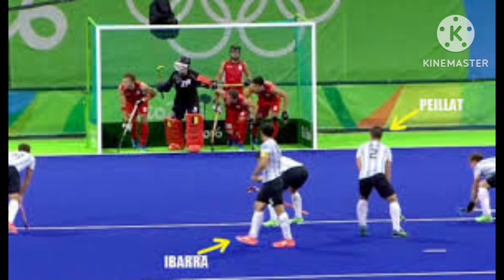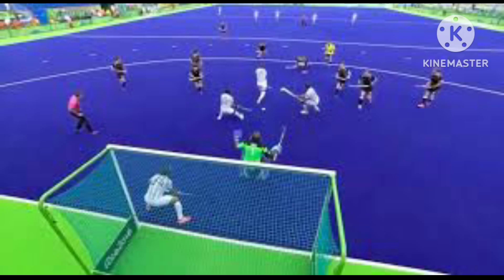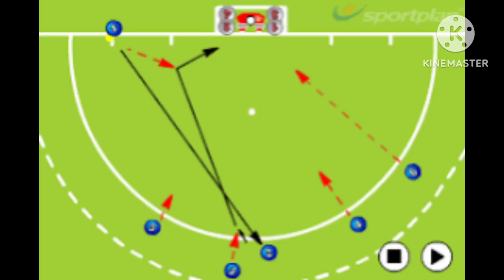During a penalty corner, the ball is placed 10 meters from the goal post on the back line, and a player pushes the ball along the carpet towards the top of the striking circle. No attacking player can be inside the D.